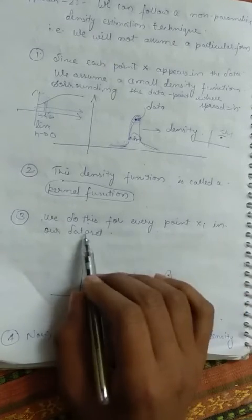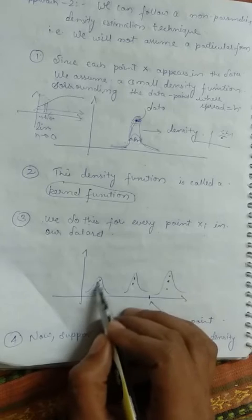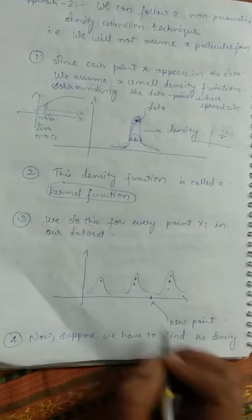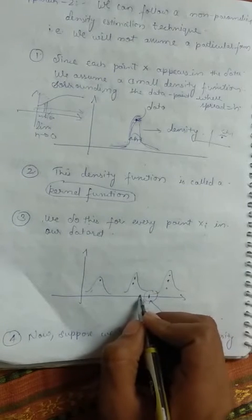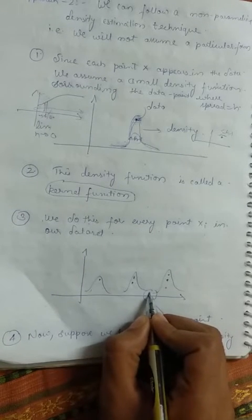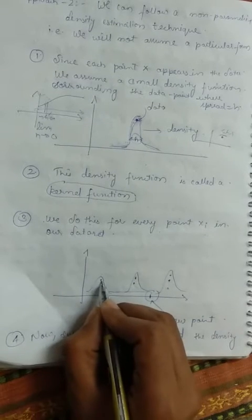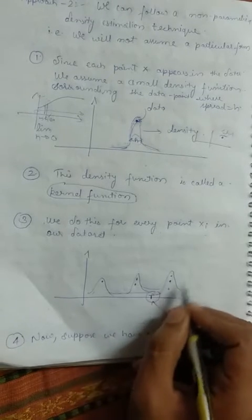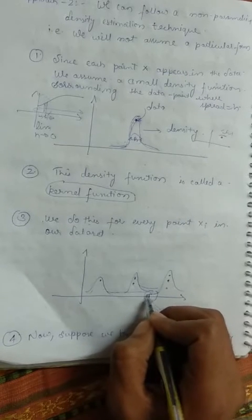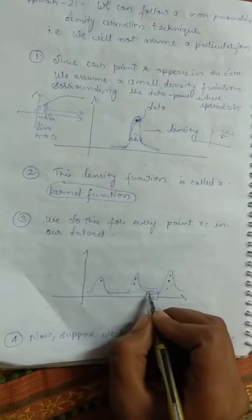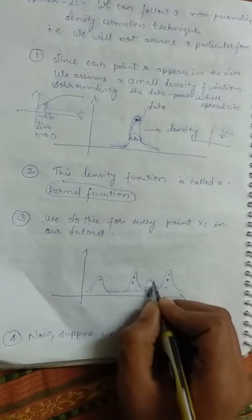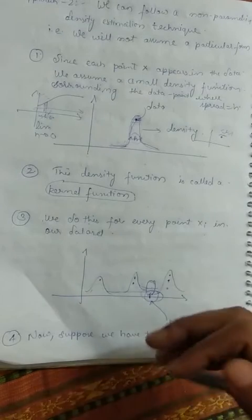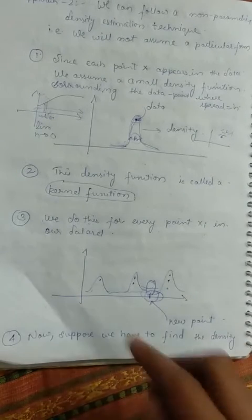We do this for every point x in our dataset, assuming a probability distribution around the proximity of each point. Suppose we have to find the density at a new point x0. The density at x0 may come from the distribution centered at nearby points — all these small distributions contribute to the density at x0. By summing the density contributions from all these points, we get an approximation of the density at x0.